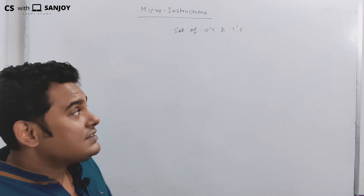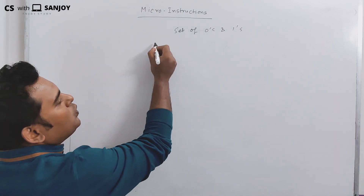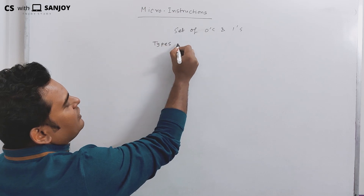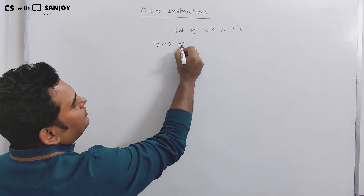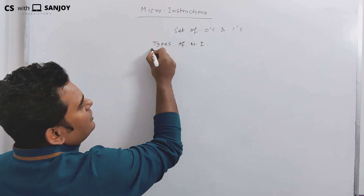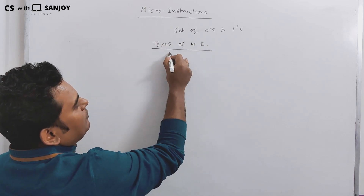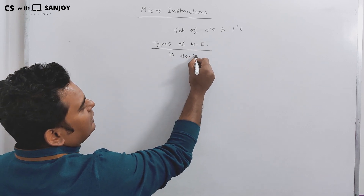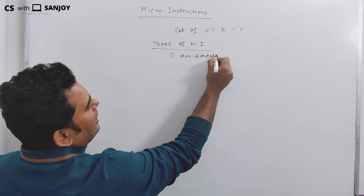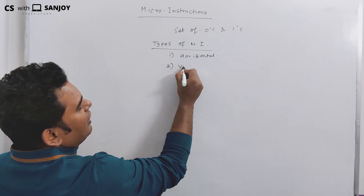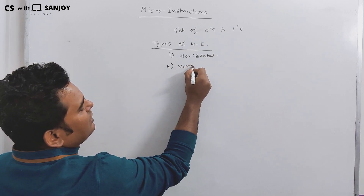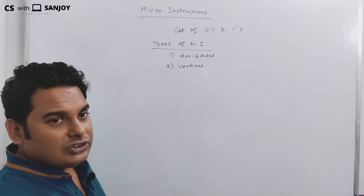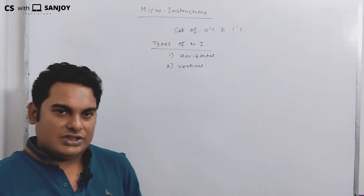Micro-instructions are of two types. Number one is horizontal micro-instruction, and number two is vertical micro-instruction.